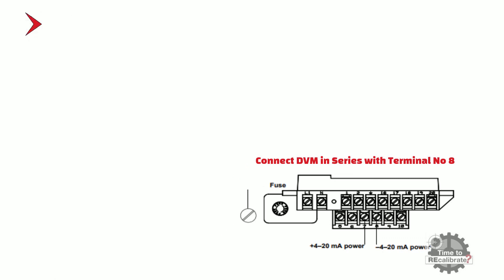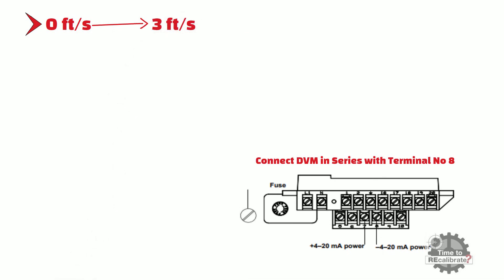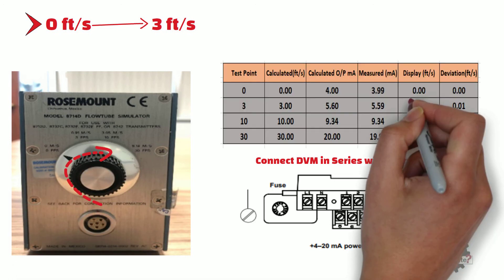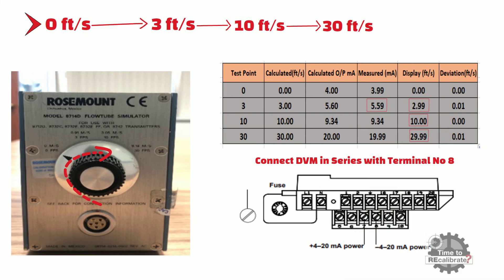Step 8: Move the knob of the simulator to the 3 feet per second position from 0 feet per second. The measured flow value will be displayed on the screen and should be close to 3 feet per second. Also note down the measured milliampere value from the digital voltmeter — this value should be close to 5.60mA. Now move the knob to 10 feet per second and note down the measured flow value, which should be close to 10 feet per second. Then move the knob to 30 feet per second — the measured flow should be close to 30 feet per second and the milliampere value should be close to 20mA.